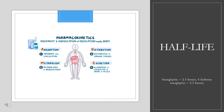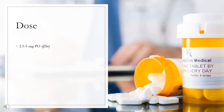Half-life: Saxagliptin equals 2.5 hours; 5-hydroxy-saxagliptin equals 3.1 hours. Dose for diabetes mellitus type 2: 2.5–5 mg, PO once daily.